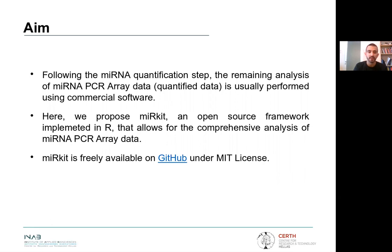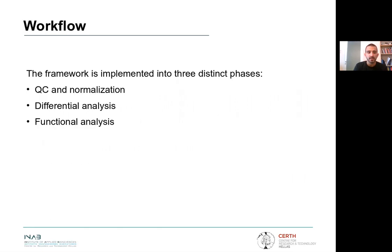MIRKIT is freely available on GitHub under MIT license. Our framework implements three distinct tasks: the first one is quality control and data normalization; the second one is focused on detecting differentially expressed microRNAs, called differential analysis; and the third one is responsible for connecting those targeted microRNAs with corresponding functionalities, called functional analysis.